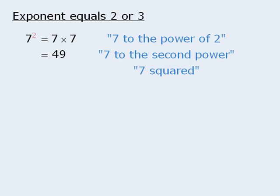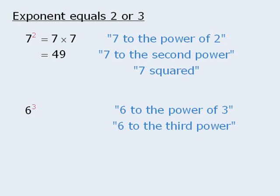There is also special terminology when the exponent is equal to 3. We can read this expression as 6 to the power of 3, or 6 to the third power, or 6 cubed. So if the exponent is 3, we can say that the base is cubed. In this example, 6 cubed is equal to 216.